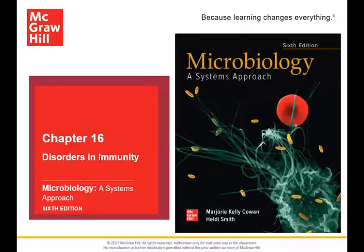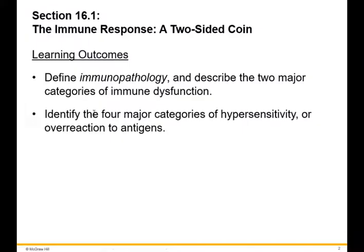Chapter 16 is disorders in immunity. In section 16.1 we're going to look at the immune response as a two-sided coin. Our learning outcomes are to define immunopathology and describe the two major categories of immune dysfunction, then look at an overview of the four major categories of hypersensitivity, or overreaction to antigens.